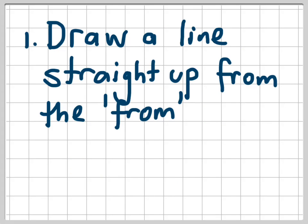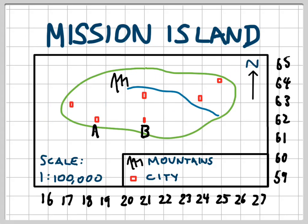The first step is to draw a line straight up from the from. In the question it will always say what is the bearing of one place from another place. In our example we said what is the direction of B from A, so A is our from place and we said we're going to draw a line straight up from there.